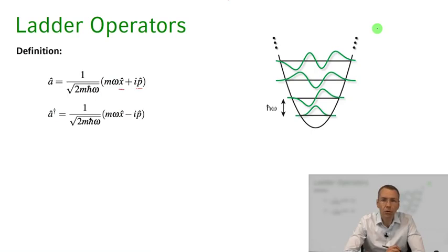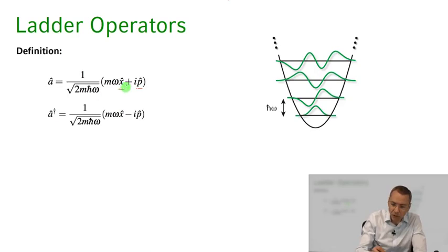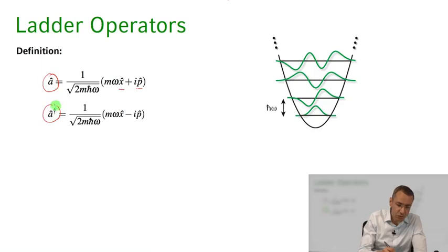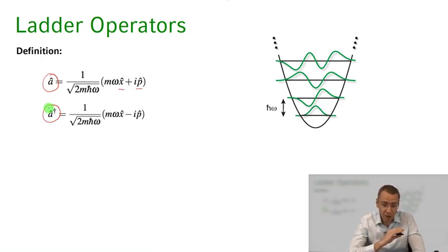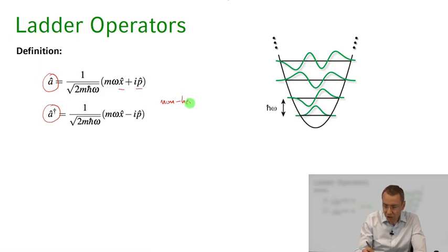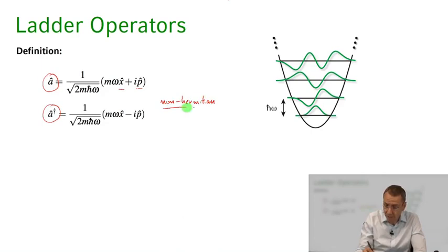Let's go one step further and now define the so-called ladder operators in this harmonic oscillator. These are defined through superpositions of the position and momentum operators. This is the so-called destruction operator and this is the so-called creation operator. We'll see in a second why they're called like that. You can see that these are non-Hermitian — if you take the Hermitian conjugate of a you get a-dagger, so you don't get the operator back itself. So these are non-Hermitian and therefore non-observables.